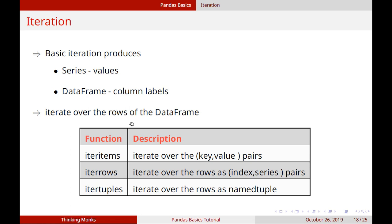There are 3 functions in DataFrame. First, iteritems - if you iterate in key-value pairs. Second, iterrows - if you iterate in rows, you iterate by index, then you iterate in Series. Third, itertuples - if you iterate in tuples, you iterate in named tuples.